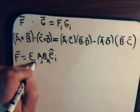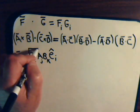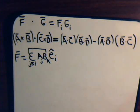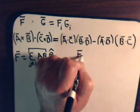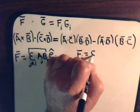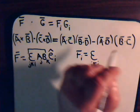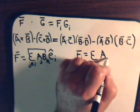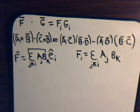Where, as we've demonstrated in our previous videos, this part right here then is F sub I. So we have equals Epsilon JKI A_j B_k.